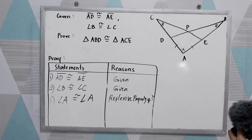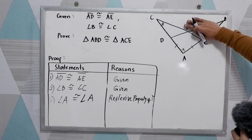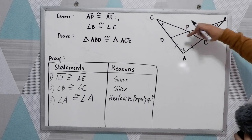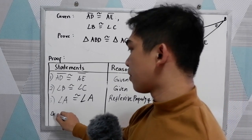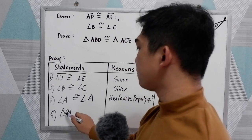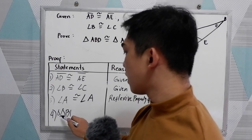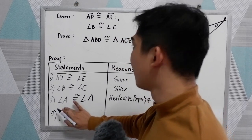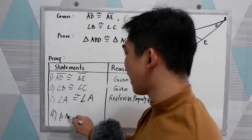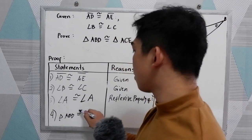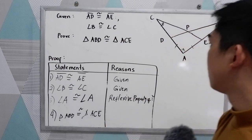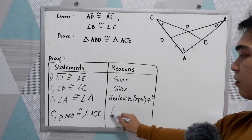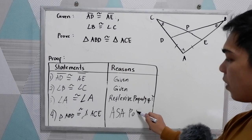Now in our triangle, we have the angle-side-angle. So number four: triangle ABD is congruent to triangle ACE. That is by the angle-side-angle, or the ASA postulate.